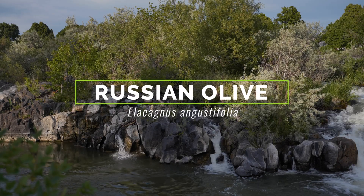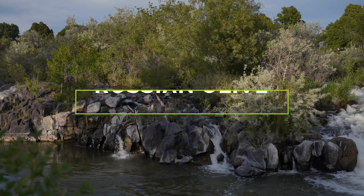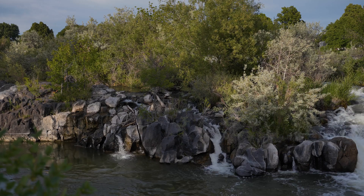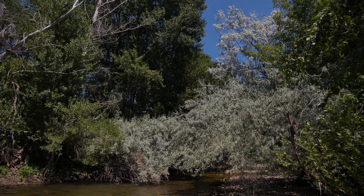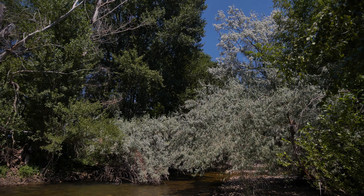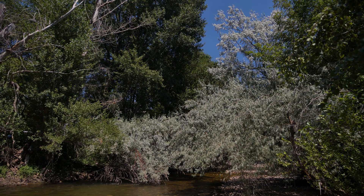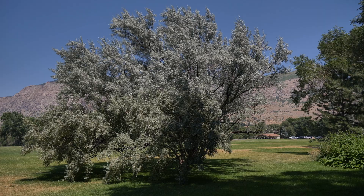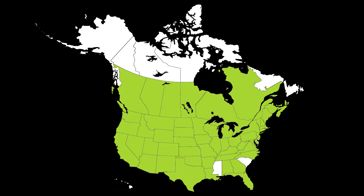Russian olive is a weedy tree or large shrub, native to Asia and Eastern Europe. It was intentionally introduced to Canada and the United States in the early 1900s for use as an ornamental, a shade plant, and a windbreak. It has since been reported throughout most of North America, but is especially problematic in the Northwest.